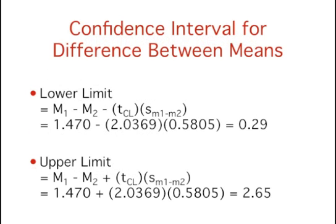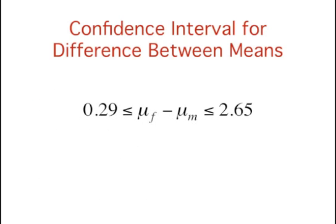Therefore, the lower and upper limits of the 95% confidence interval can be computed to be 0.29 and 2.65. We can write the confidence interval as 0.29 is less than or equal to mu sub f minus mu sub m, which is less than or equal to 2.65.